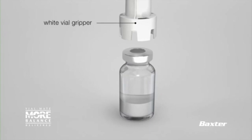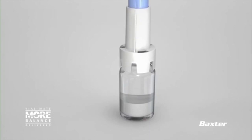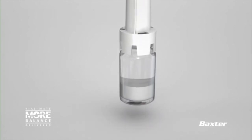To assemble the vial mate is super simple. Just press the white vial gripper down onto the vial. Now, this does take some force, so place the vial on a table and make sure you press straight down.